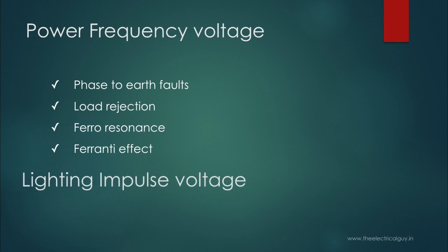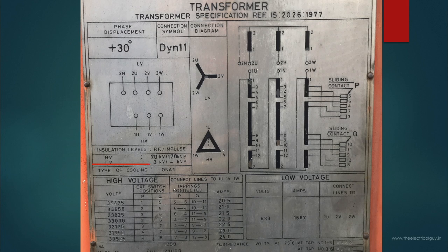The lightning impulse can be generated due to lightning strokes and as you have seen it is mentioned in peak because it remains in the system for very short time. So this was about the insulation levels.